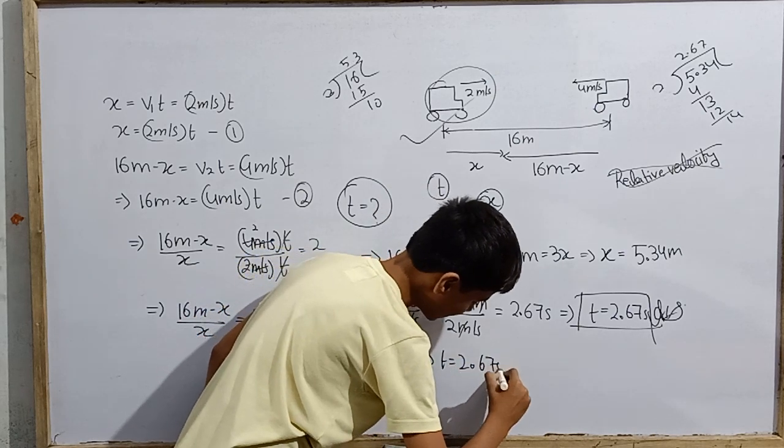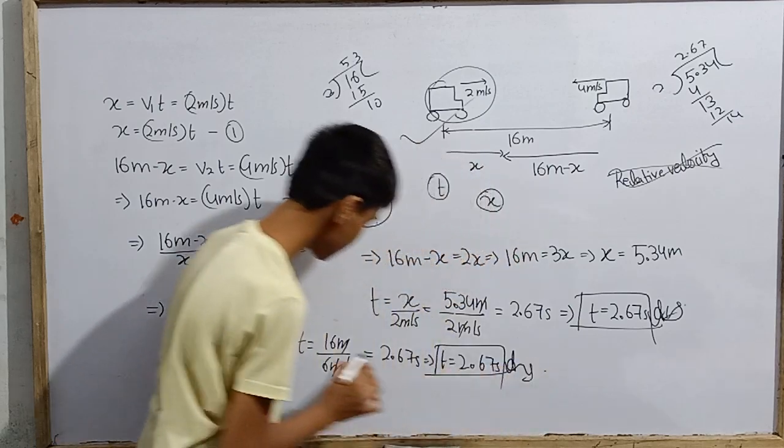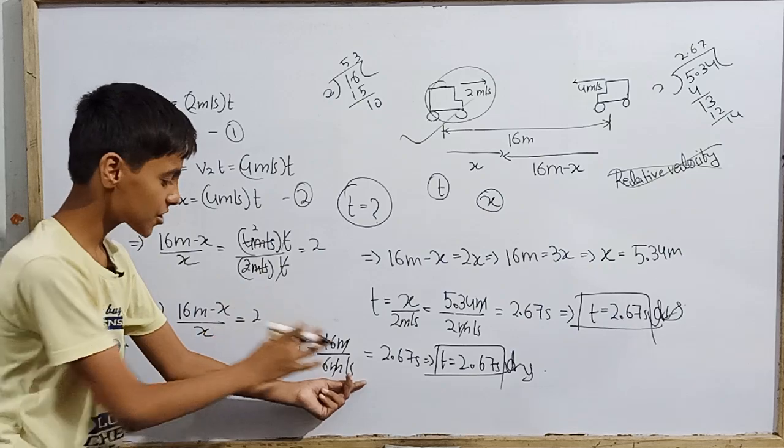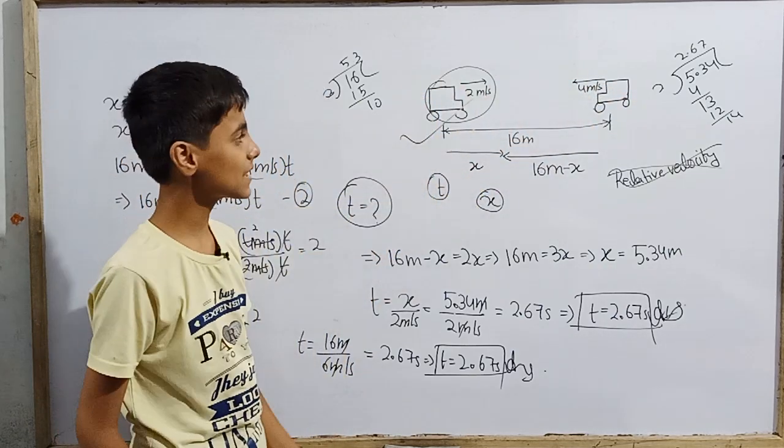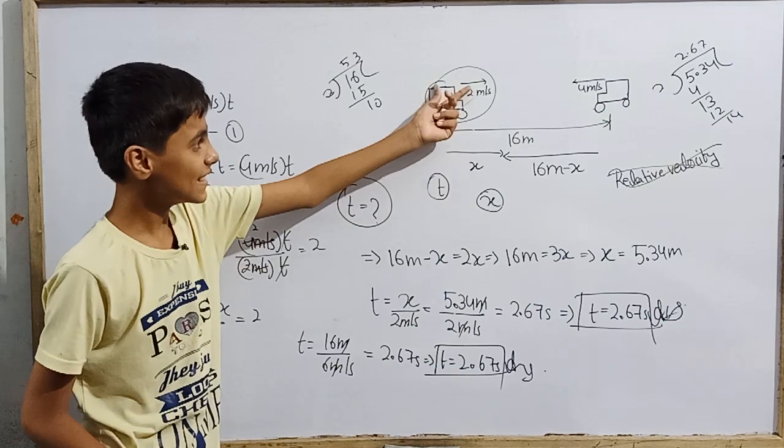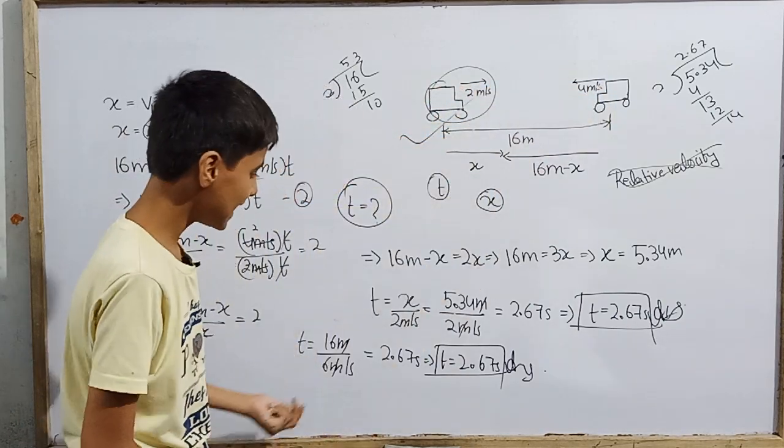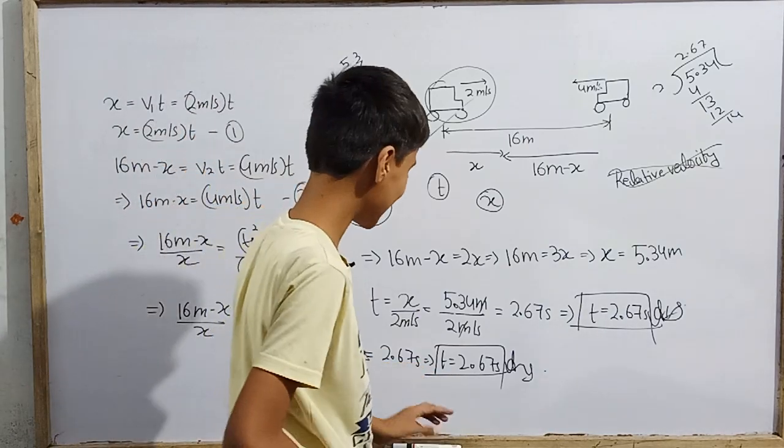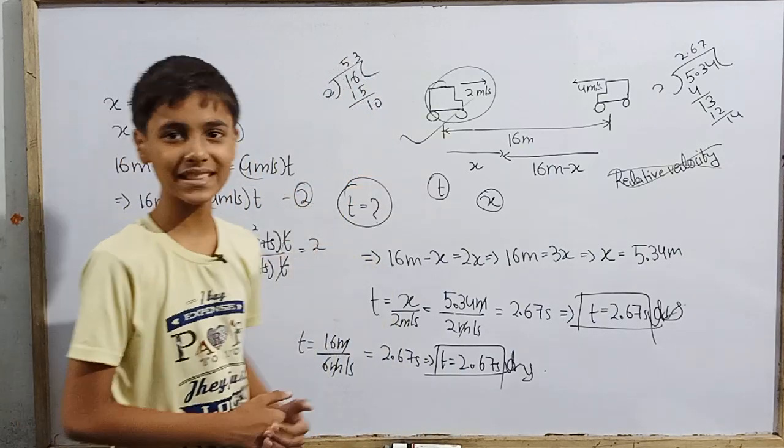This is 16 over 6, which is also 2.67 seconds. Here, this is also 2.67 seconds. So if we use relative motion and relative velocity, this is at 6 meters per second. This gets solved very easily.